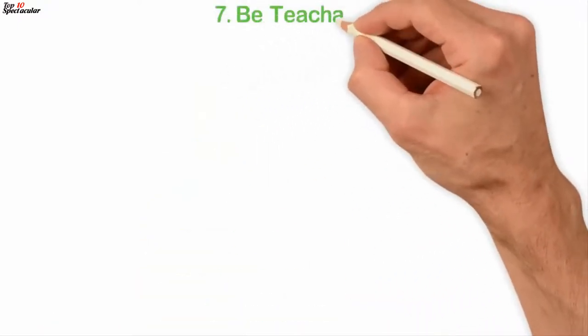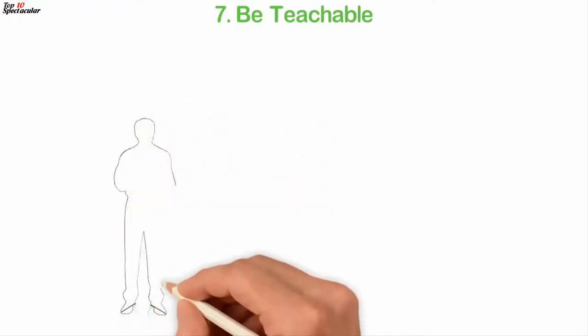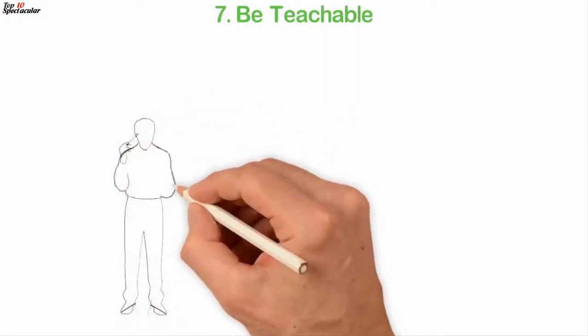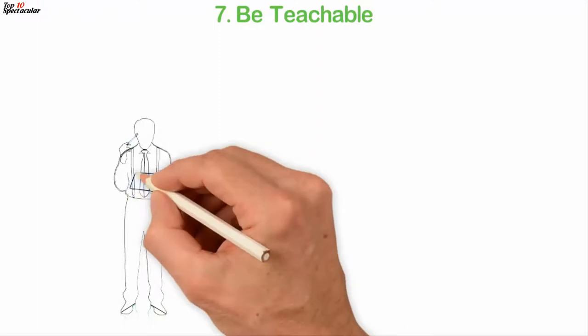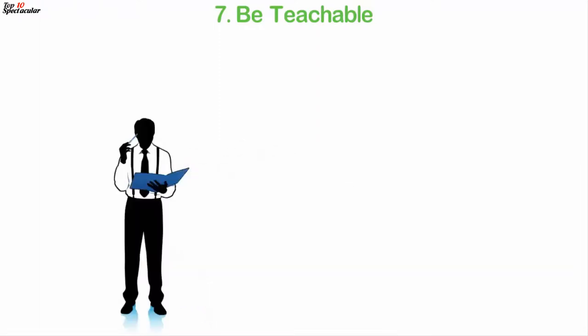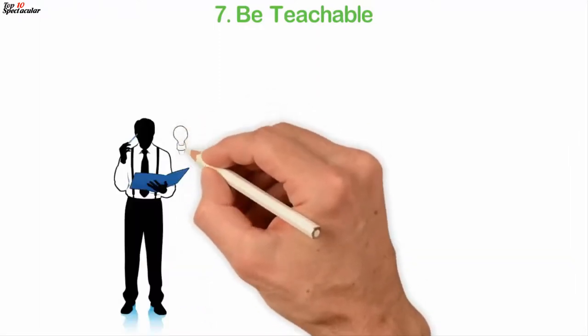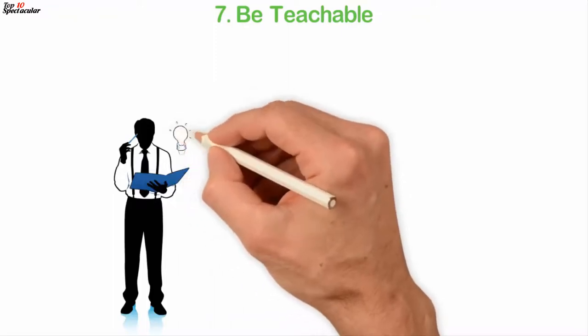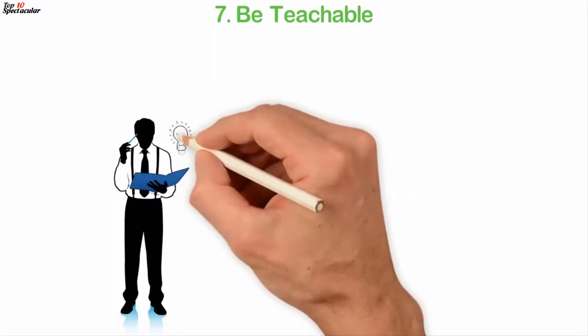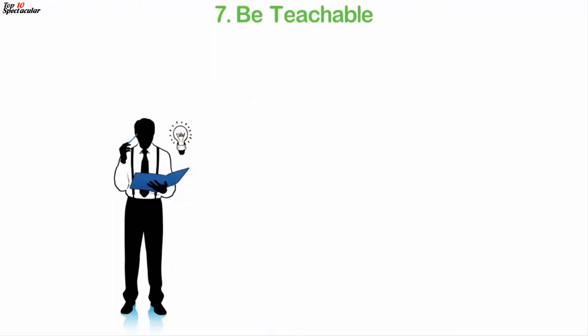7. Be teachable. Successful people are constantly looking for avenues to get things done effectively and efficiently. Hence, they are always learning and growing. They never stop seeking knowledge from others. If you're going to satisfy your thirst for knowledge and keep learning, then you must be teachable.